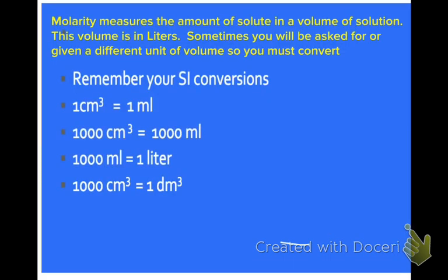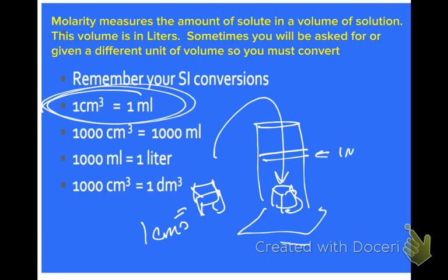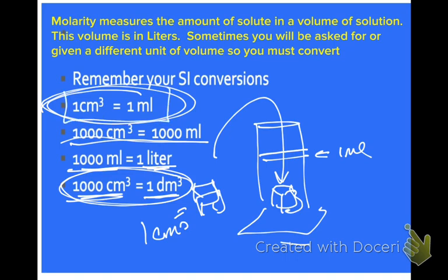Molarity is moles of solute over liters of solution. Sometimes we won't be given liters — sometimes you'll be given a different unit of volume. Remember your SI conversions: 1 cubic centimeter equals 1 milliliter. If you took a 1 cm × 1 cm × 1 cm object and placed it in water, it would displace 1 milliliter. So 1 mL and 1 cm³ are the same. That means 1,000 cm³ equals 1,000 mL, and 1,000 mL equals 1 liter, and there are 1,000 cubic centimeters in 1 cubic decimeter.